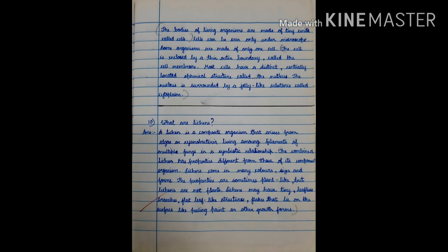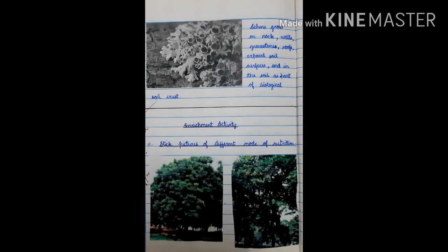Lichens come in many colors, sizes and forms. The properties are sometimes plant-like, but lichens are not plants. Lichens may have tiny leafless branches, flat leaf-like structure, flakes that lie on the surface like peeling paint or other growth forms. Lichens grow on rocks, walls, gravestones, roofs, exposed soil surfaces and in the soil as part of biological soil crust.